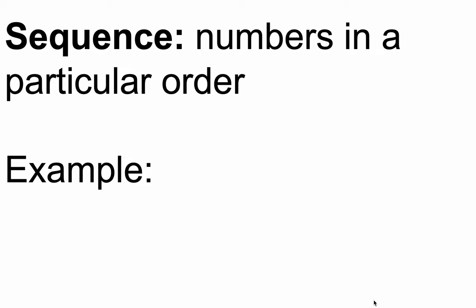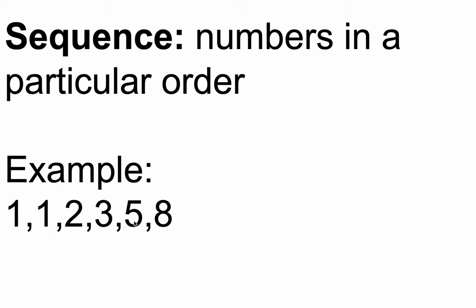For example, perhaps I start with the number 1 and I want the next number to be 1 after that. But then from that point on, I just add the two most recent numbers in the sequence. So right now, the two most recent numbers are 1 and 1. If I add those, I get 2. And if I add the two most recent numbers now — 1 and 2 — I get 3. And if I add 2 and 3, I get 5. Then 3 plus 5 is 8, 5 plus 8 is 13, 8 plus 13 is 21, and so on and so forth. This is a sequence.